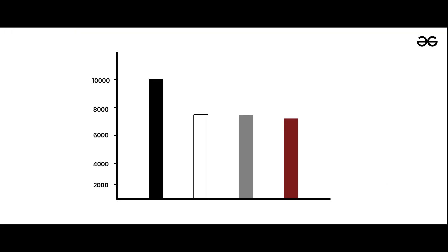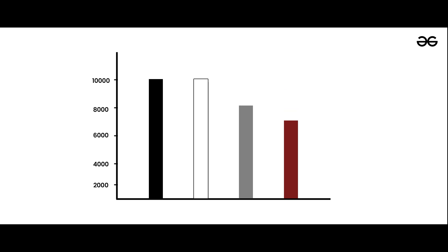For example, they won't produce 10,000 black cars, 10,000 white cars, and 10,000 red cars equally. They know that most people are going to buy white, then black, then the other popular colors — and the ratio of people buying less popular colors is small. So they won't invest money equally into all colors. That's the core of data analysis.